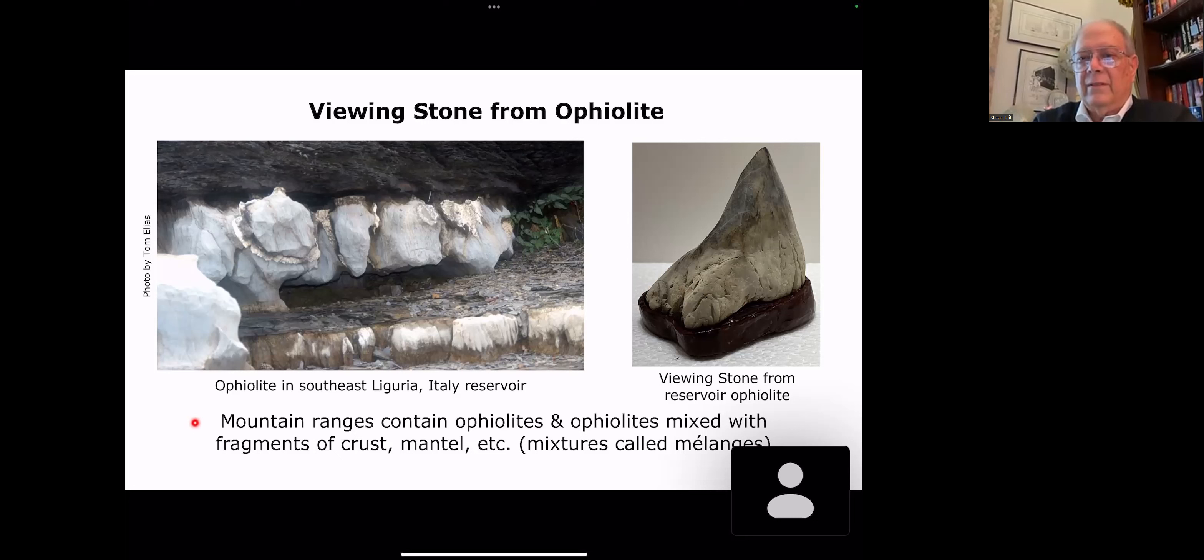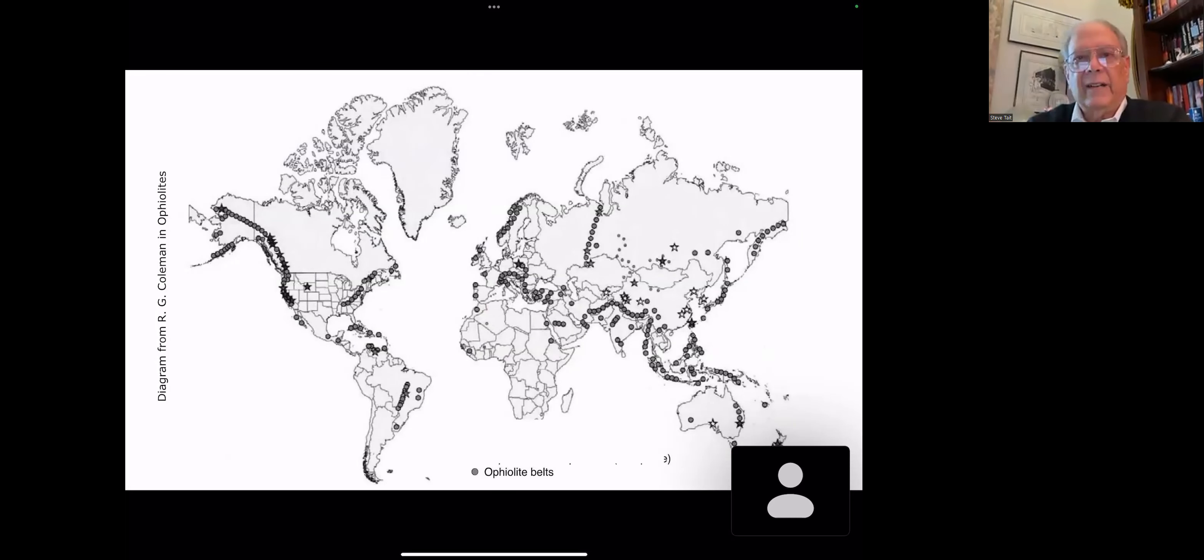So mountain ranges are just filled with ophiolites and ophiolites mixed with fragments of crust and mantle, which are called melanges. And this is a world diagram that Robert Coleman put in his book, Ophiolites. He set the template for how to analyze these and characterize these. They'd been around for a long time, but he kind of pioneered how it should be done. Those of you who live in California, you can see why when you go to Eel River in Trinity County, California, or the Yuhaw Desert, you're finding all kinds of really cool viewing stones. Those of you who live in Canada, tons of ophiolites, hundreds and hundreds of ophiolites. Japan, Korea, China, of course, and really worldwide. It's a very common phenomenon.